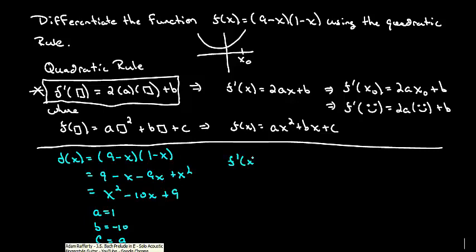So the derivative as a function of x is going to be equal to 2 times the a value times the, whatever you see here, plus the b value. So that's going to be 2x minus 10, that's the derivative.